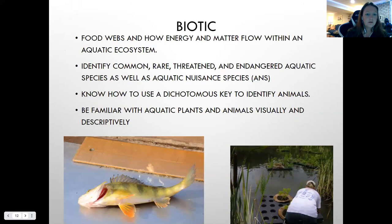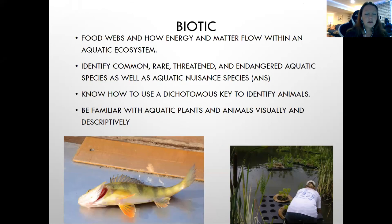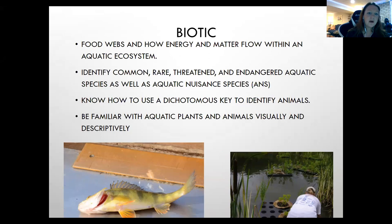Go through those slides and resources to make sure you understand all the abiotic concepts. The next section is biotic, which focuses on food webs and how energy and matter flow within an ecosystem. You need to be able to identify common, rare, threatened, and endangered aquatic species, as well as aquatic nuisance species.